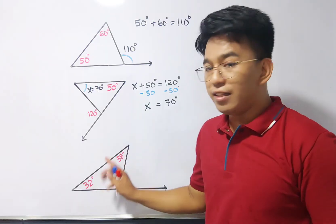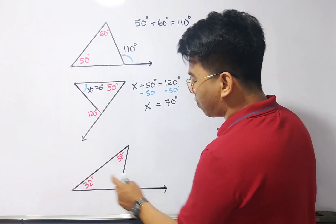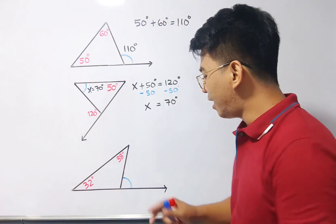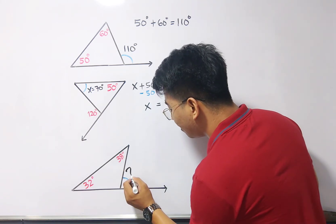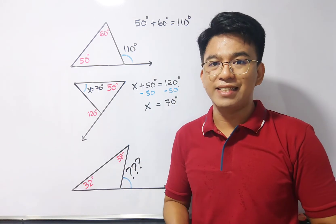Now, we have here this triangle. So, we have x squared. Ah, sorry, x squared. We have 32 degrees, 38 degrees, and it's your turn to answer and find the value of the missing angle.